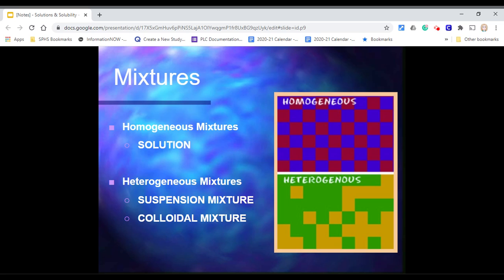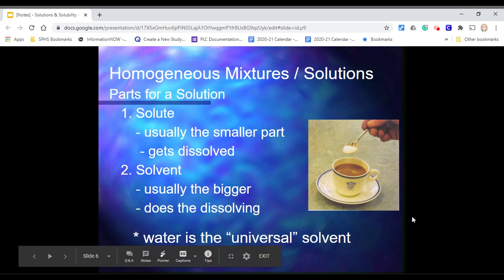And the different types of heterogeneous mixtures that we talk about are suspensions and colloids. Homogeneous: uniform throughout. Heterogeneous: not uniform.